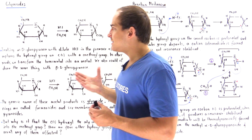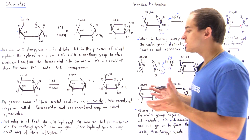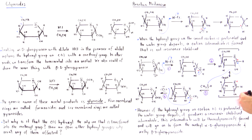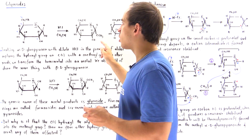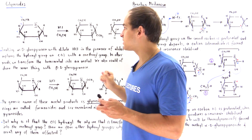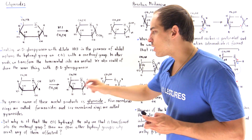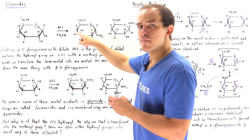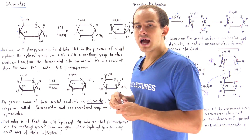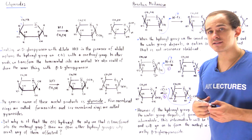To answer this question, we need to discuss the reaction mechanism. By the way, when we form six-membered glycosides, these are known as pyranosides. If we form five-membered glycosides, those are known as furanosides.